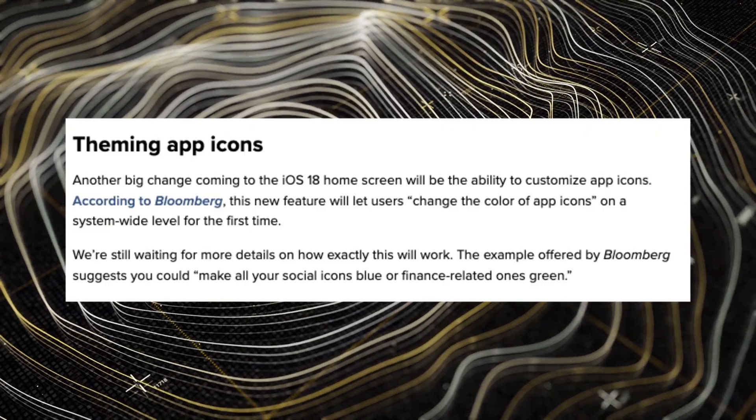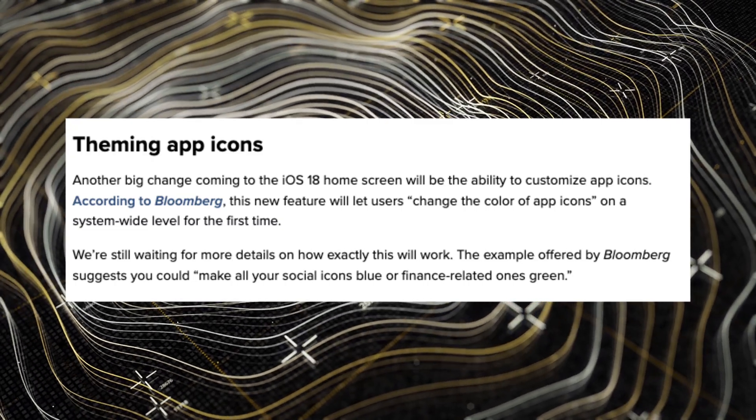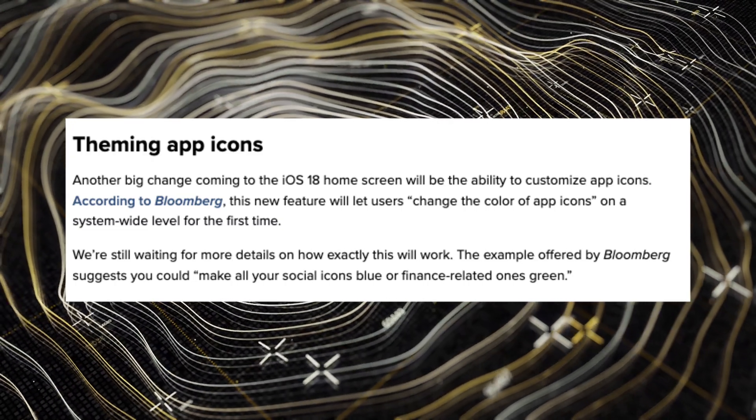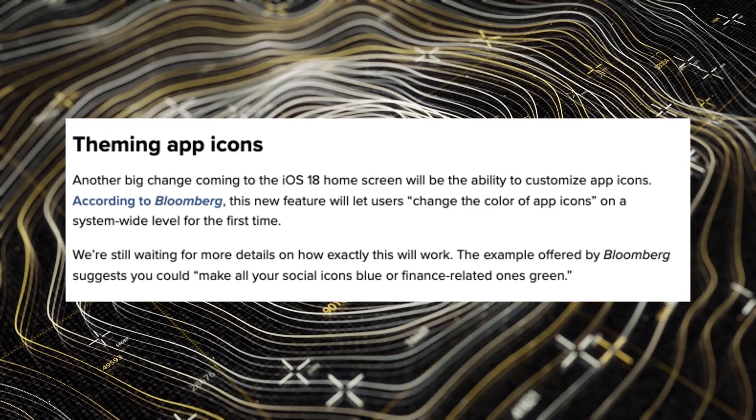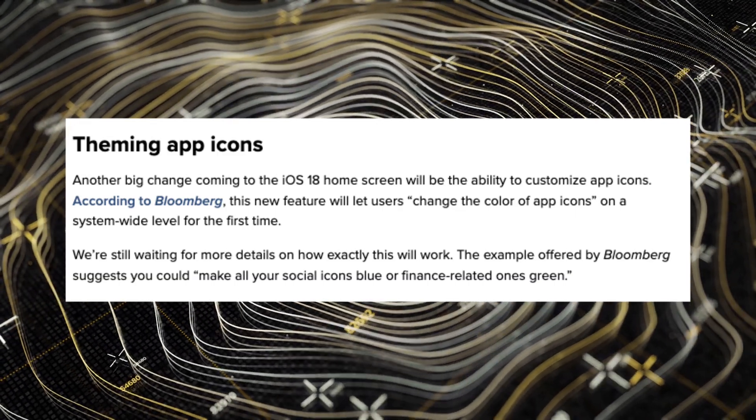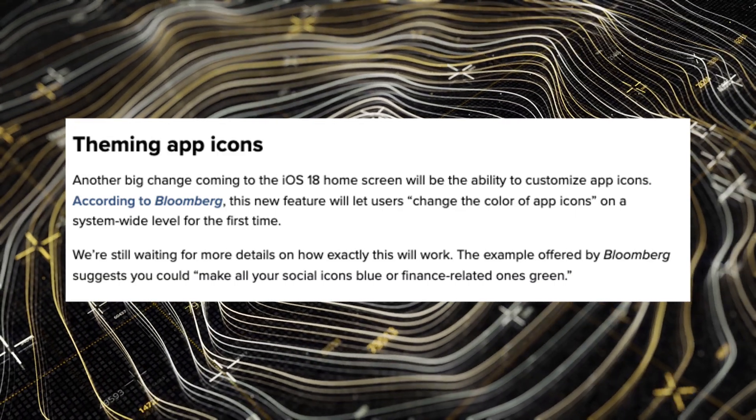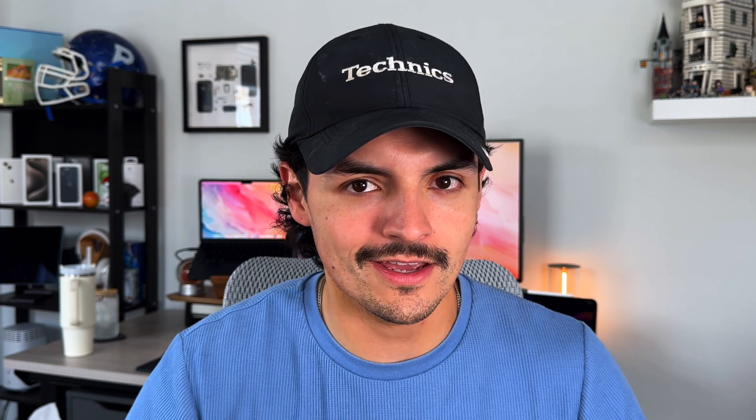The second feature, also on the customization side, will allow us to change and customize the colors of our icons. We can technically do that right now with iOS Shortcuts, but you still get that shortcut animation and it's not a perfect situation. Apple may let us change colors based on categories and hues, and there is some sort of customization coming on a per-app-icon basis.